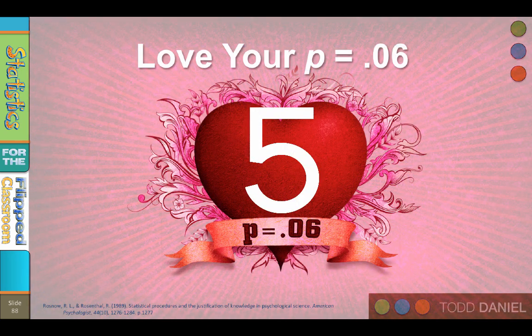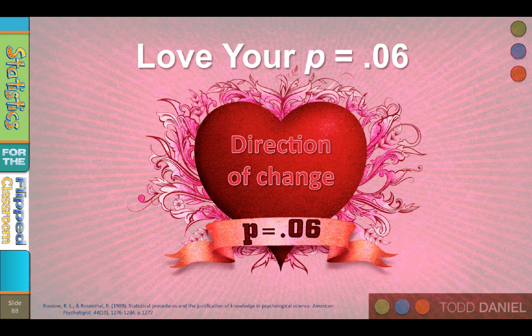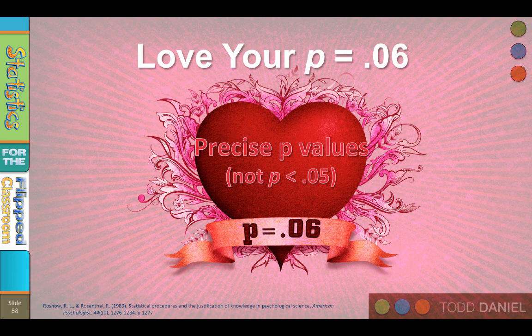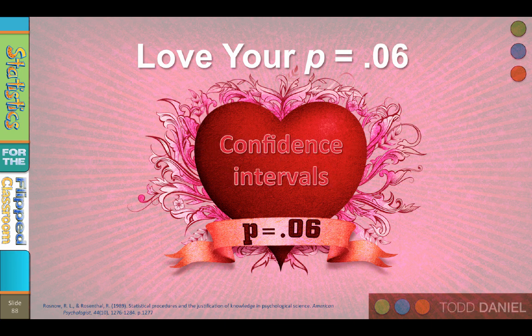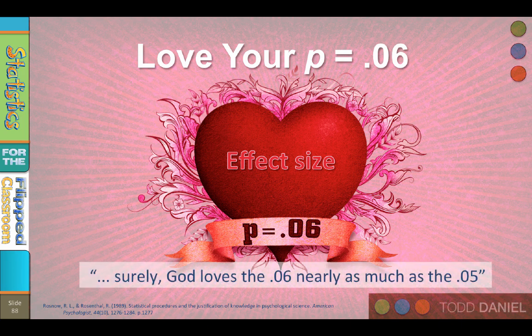And so, love your p equals .06. Maybe that p of .06 really does have something useful to tell us. Maybe the direction of change also counts for something. And we should demand to know precise p-values and not be satisfied with p less than .05. We want to see confidence intervals and the effect size as well if we are to be persuaded. Pay attention to the real world implications of research and do not be dogmatic about p equals .05. Or, as Rosnau and Rosenthal said it, Surely God loves the .06 nearly as much as the .05. Arguing for viewing the p-value as a continuous measure of the strength of evidence for or against the null hypothesis.